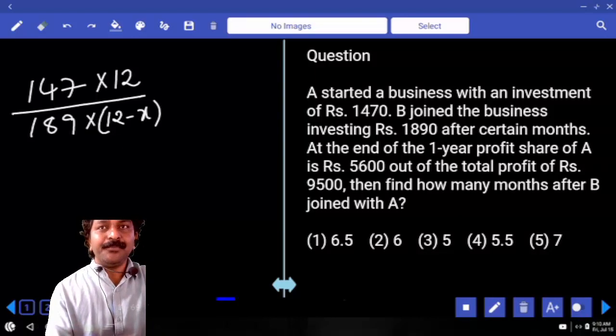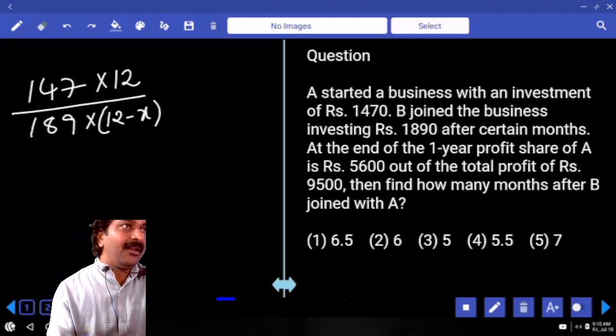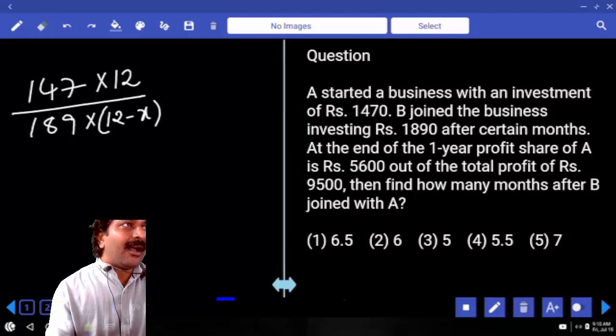Because whenever you get X value in the examination hall, you feel that you got it. An examiner will give you X value as well as 12 minus X value also.